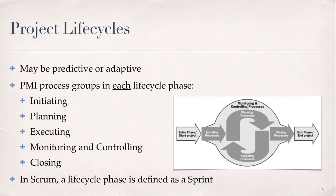As we discussed in the last module, when we talked about the Agile Scrum framework, a life cycle phase is defined as a sprint. During a sprint, you conduct constant inspections to assess progress toward the sprint goal and, consequentially, toward the release goal. Let's take a moment to review project sprints.